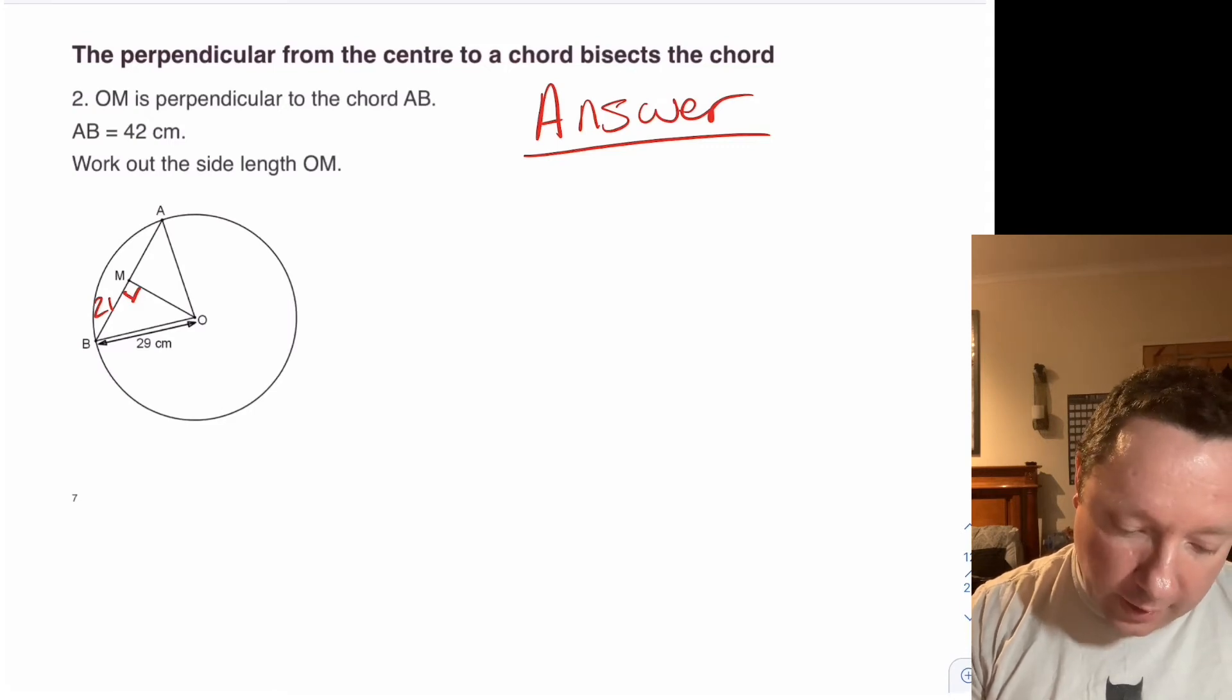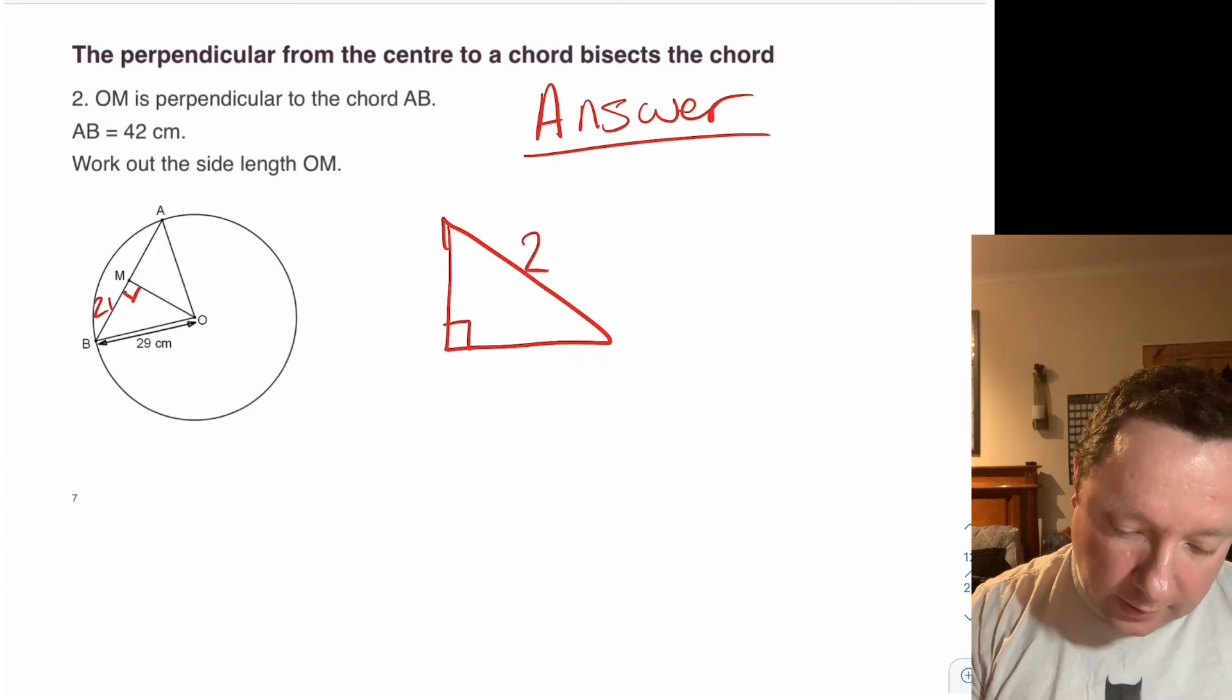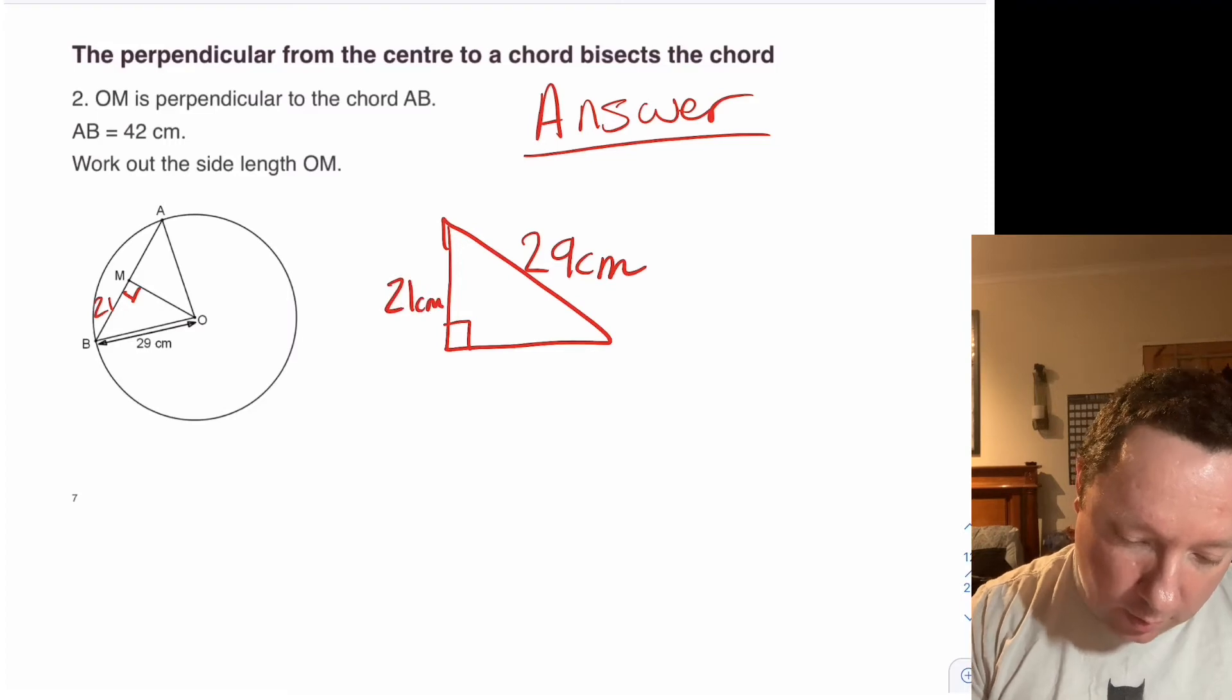We also know that this is a right angle because it used the word perpendicular. So we've now got a right angle triangle if I redraw it. The hypotenuse which is opposite the right angle is 29 centimetres. BM is 21 centimetres. And we've got a missing side down here. Let's call that X.